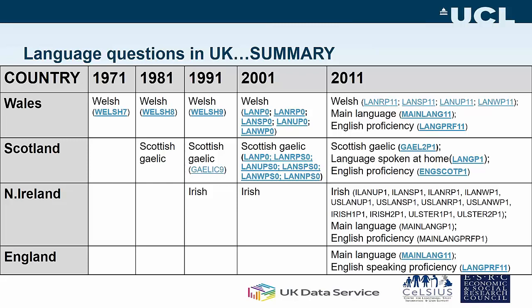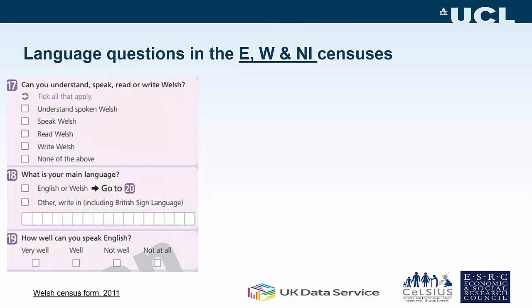This is a summary for all parts of the UK. For questions about Welsh, we have data in the longitudinal study from 1971 onwards. There's data about Scottish Gaelic from 1981 onwards in the Scottish LS, and data about use of Irish languages in the Northern Ireland longitudinal study from 1991 onwards. As well as the questions about native language use, there are also those questions about use of language mentioned in the earlier slides.